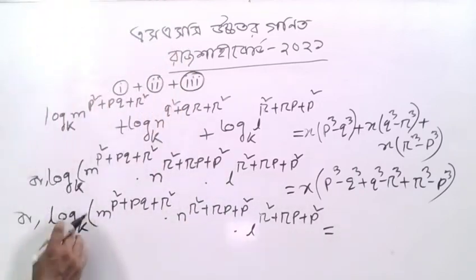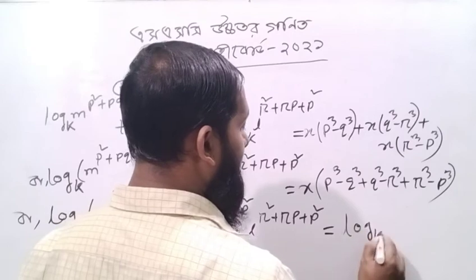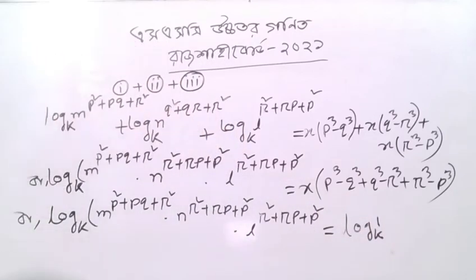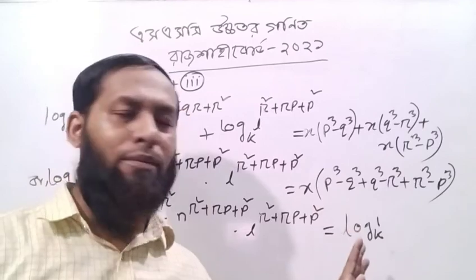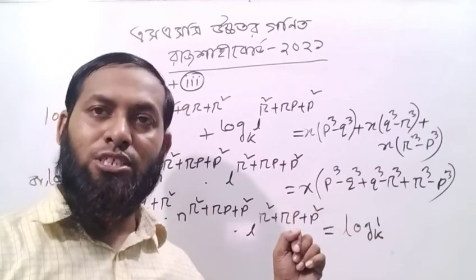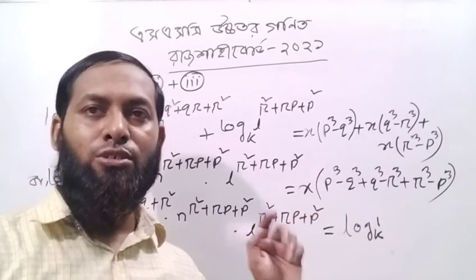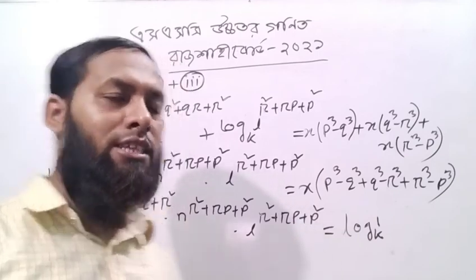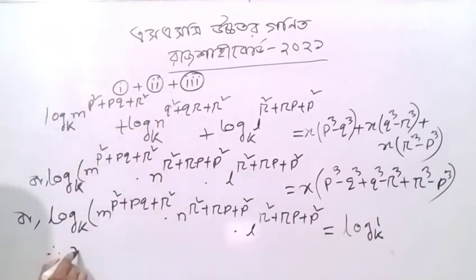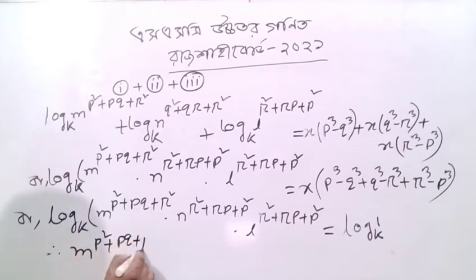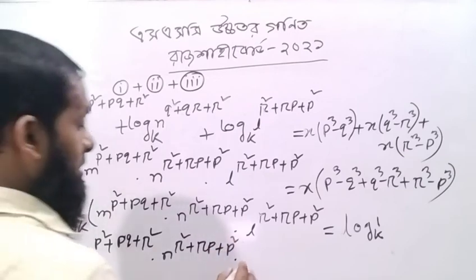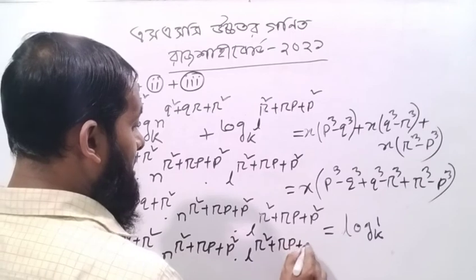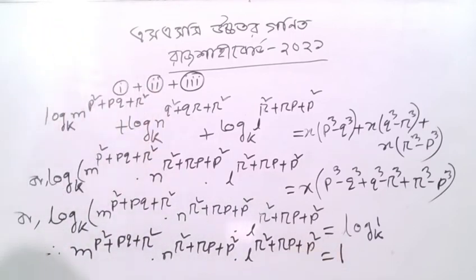0 is equal to 0 is equal to 0. Log k is equal to 1. If we look at P3, Q3, R3 — 0 is equal to 0. Log k is equal to 0. Log k, log k, m to the power p squared plus pq plus r squared, into n to the power r squared plus rp plus p squared, equal to 1.